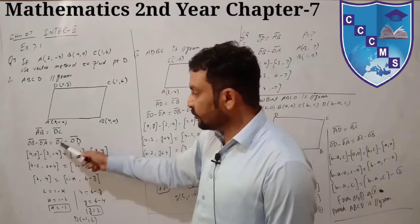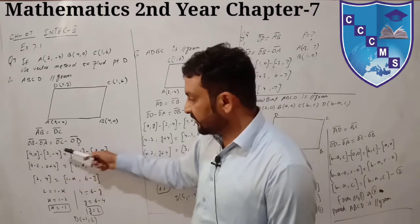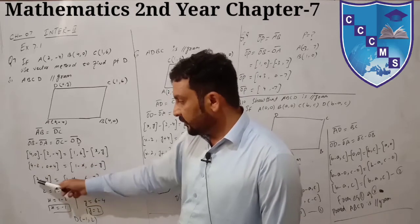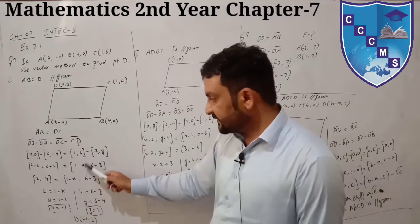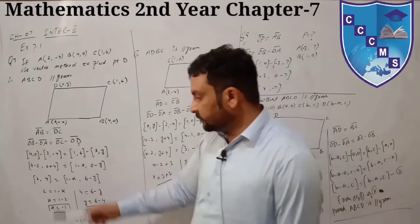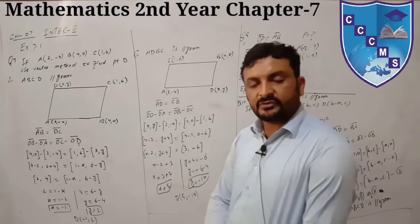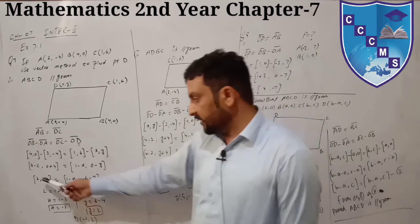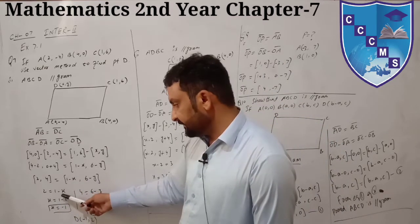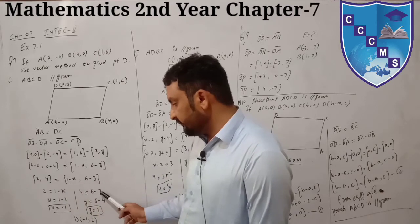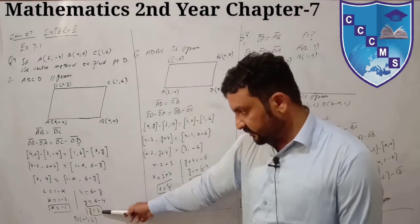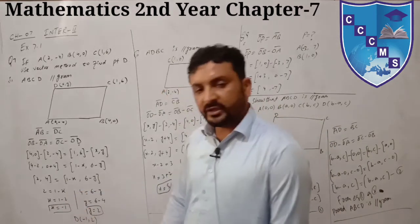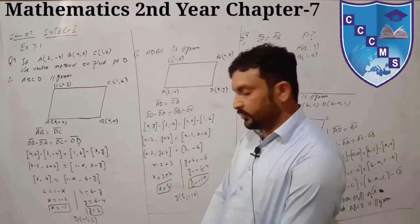Applying the formula: B minus OA, OC minus OD. Putting in values: minus 4 minus 2, 0 plus 4, gives 2 and 4. Then 1 minus x equals 2, so x equals minus 1. And 6 minus y equals 4, so y equals 2. The coordinate of D is (minus 1, 2). That is the answer for the first part.